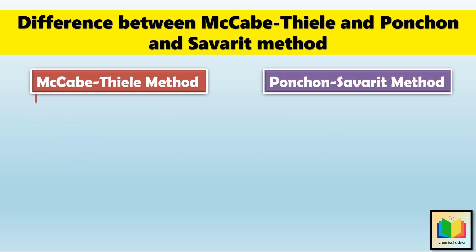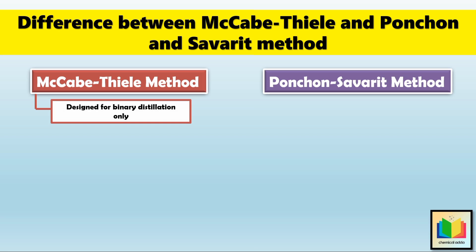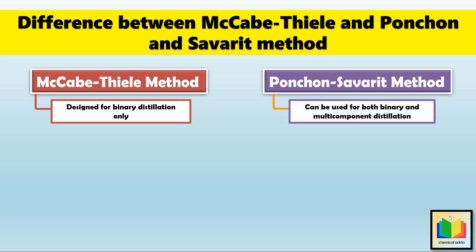The first point is applicability. The McCabe-Thiele method is designed for binary distillation only — it is best suited for the separation of just two components. On the other hand, the Ponchon-Savarit method can be used for both binary and multi-component distillation. So if you're dealing with more than two components, the Ponchon-Savarit method is a better choice.